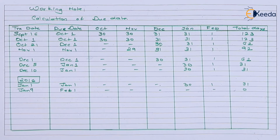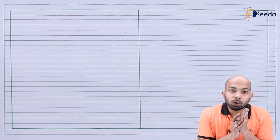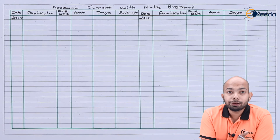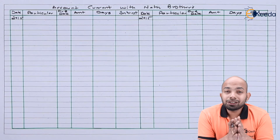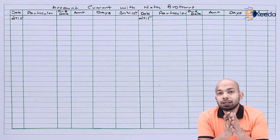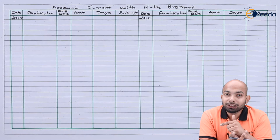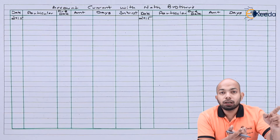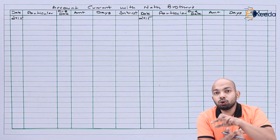With the calculation of the total number of days complete, we stop the working note and proceed to preparing the main account. When preparing the format you divide the page into two equal parts for the many columns required. The period starts in 2015 and ends in 2016. The first transaction — goods sold to Sham — gives the journal entry: Sham Account debit to Sales Account. So in Sham's account it will be debited as 'to sales' on the debit side.